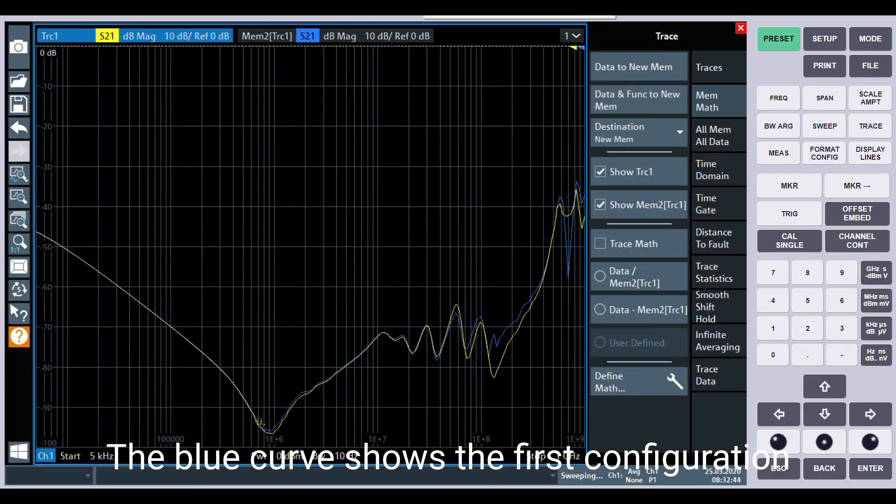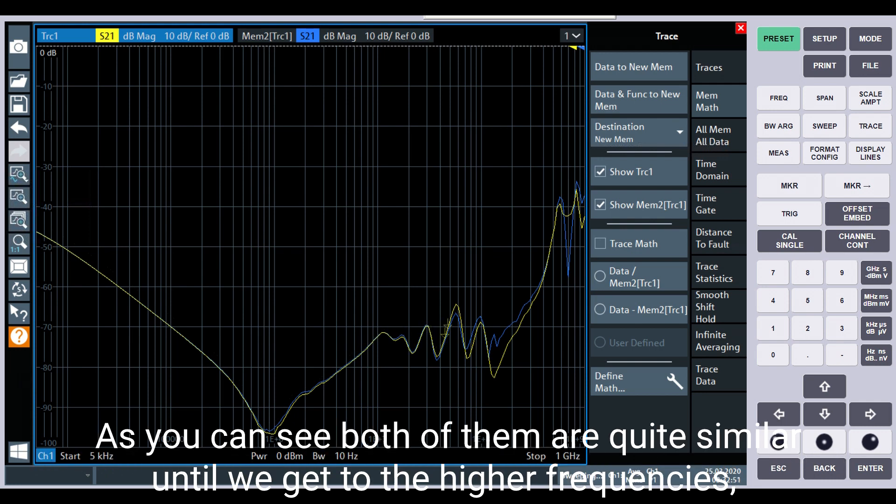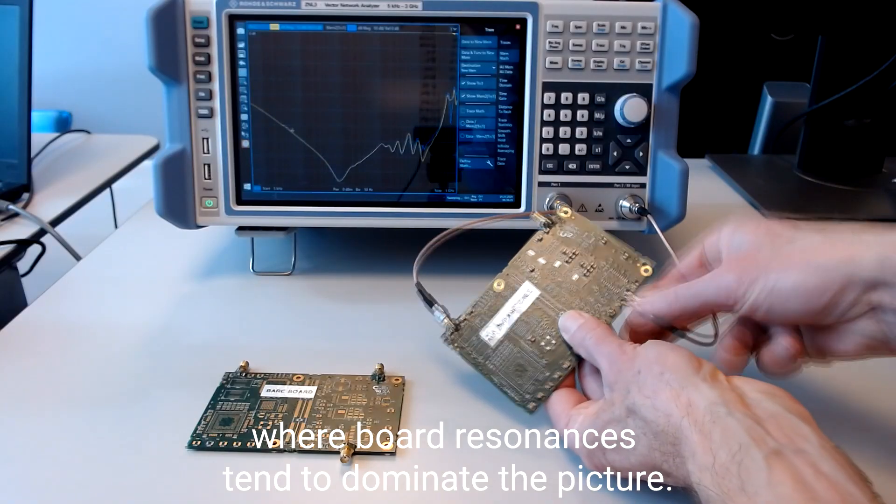The blue curve shows the first configuration, and the yellow curve shows the second configuration. As you can see, both of them are quite similar until we get to the higher frequencies where board resonances tend to dominate the picture.